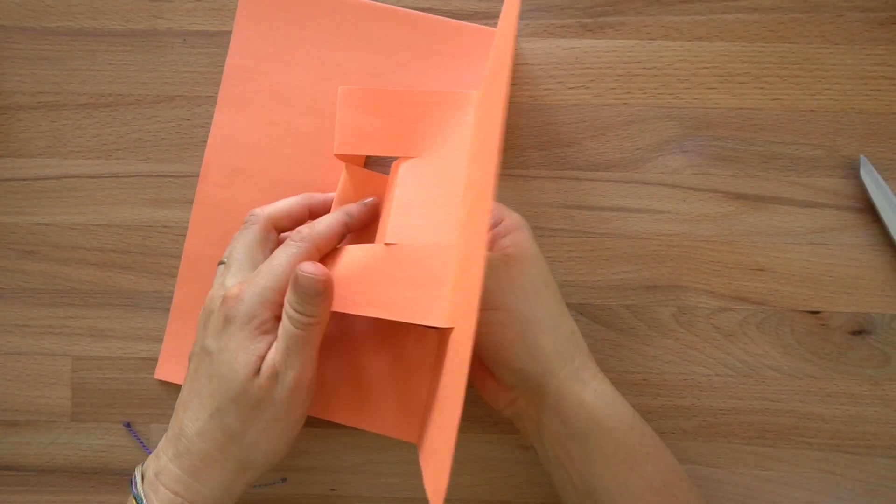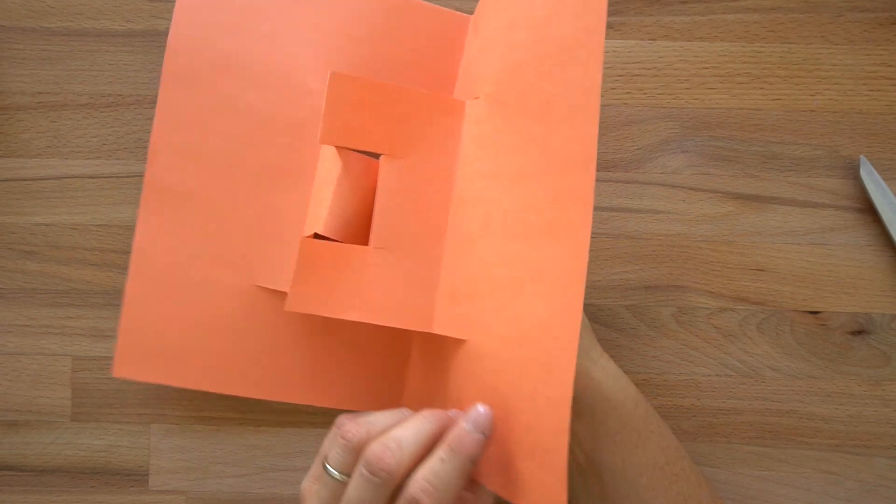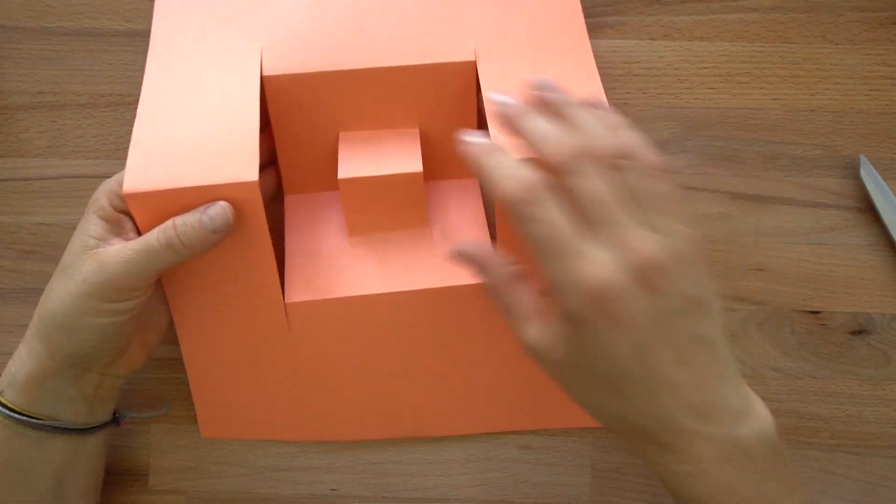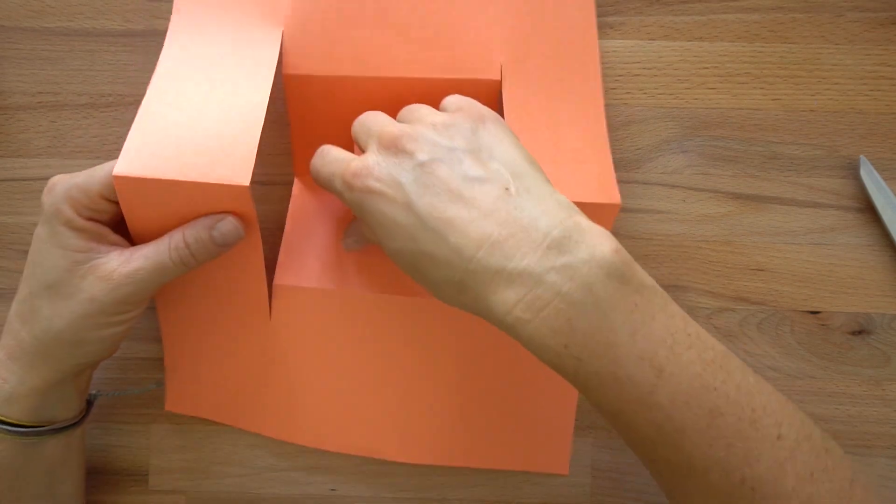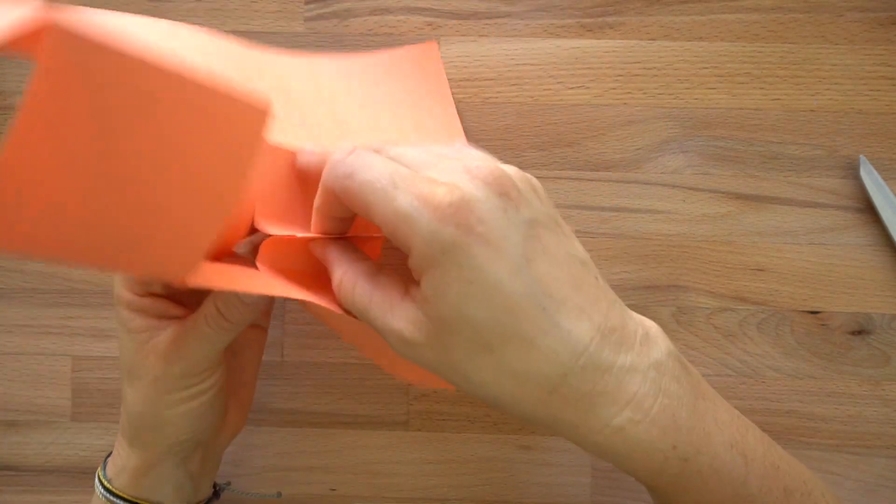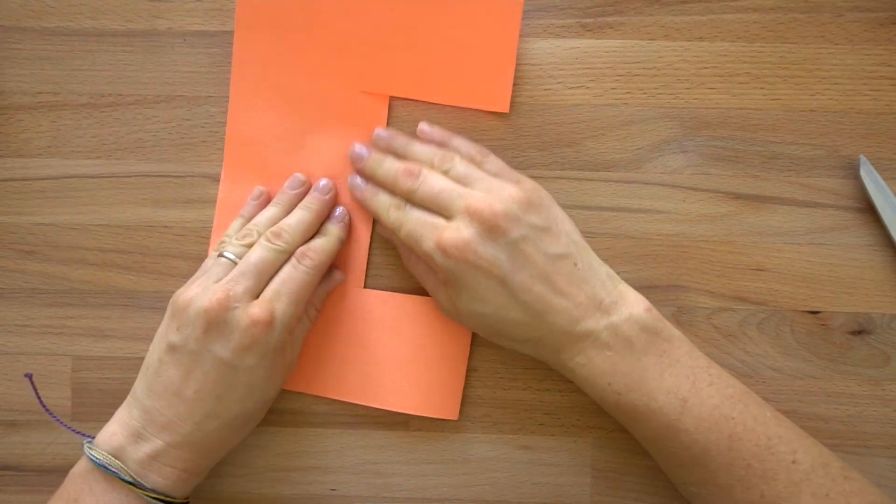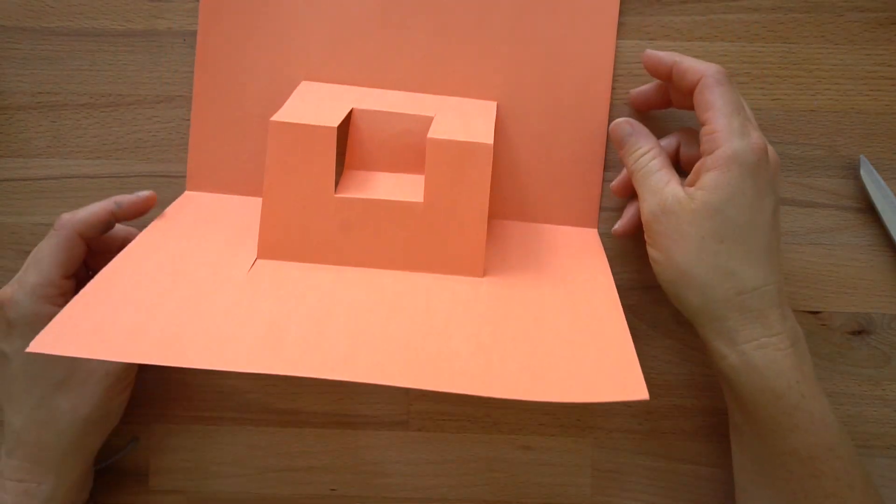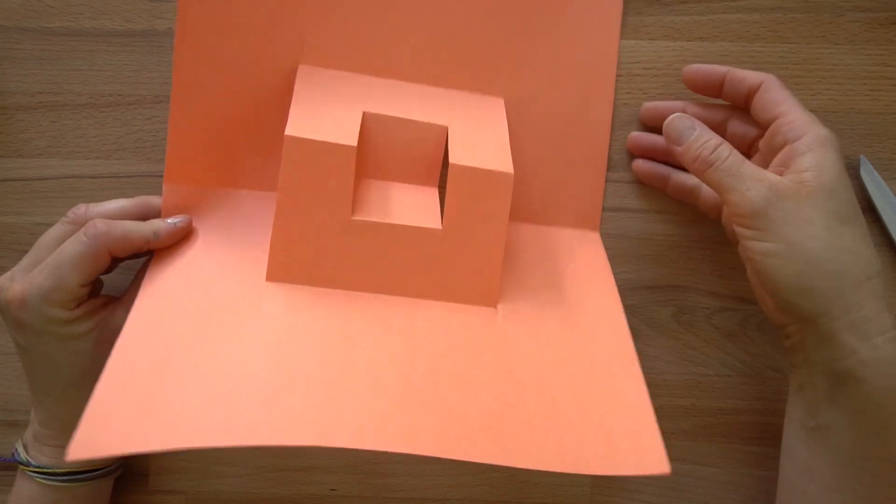And then this one we're going to fold back. So see, I'm just kind of from the side, from this side, this is the back side. I'm just kind of pinching it, and then smashing the whole card together. So that now we have just like, it looks like a little chair or something that we've created.